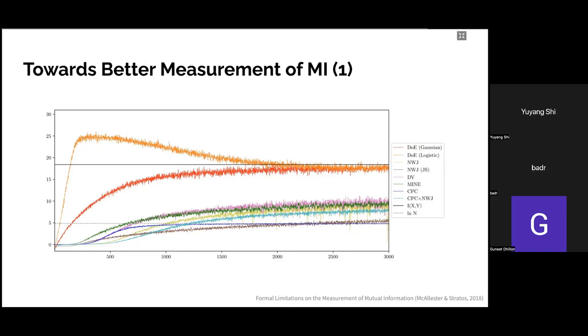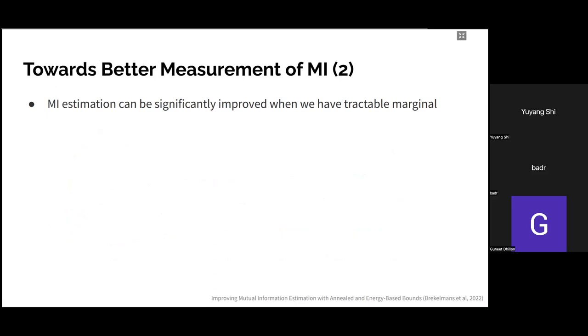They demonstrate this on a 2D Gaussian example, showing the difference-of-entropies estimator — both with the correct model family (red) and a misspecified family (orange) — gives much tighter MI estimates compared to other estimators, which are limited to O(log n). This is unsurprising since the lower-bound guarantee is dropped, but the other estimators still saturate around log-log n.